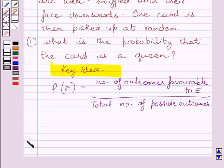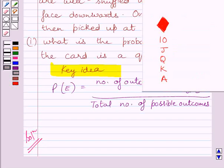Let us now start with the solution. We are given five cards of diamonds: ten, jack, queen, king, and ace. Out of these five cards, one card is drawn at random. One card can be chosen from these five cards in five ways, so the total number of possible outcomes is equal to five.